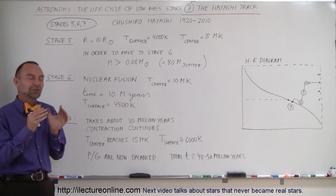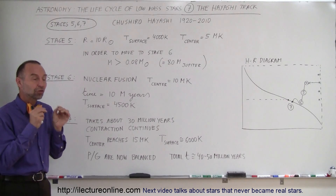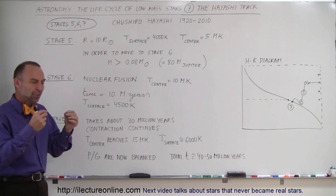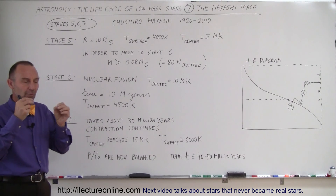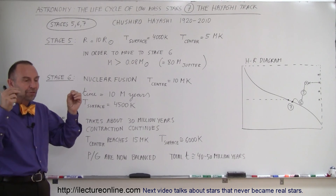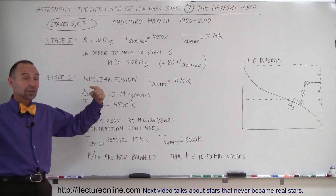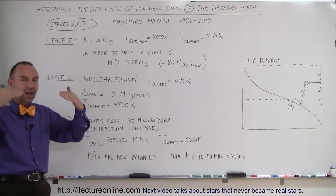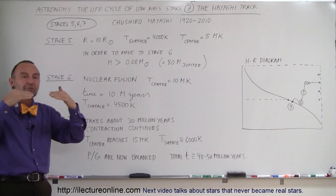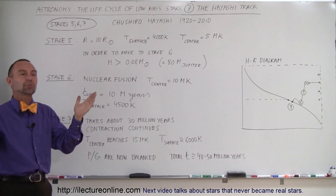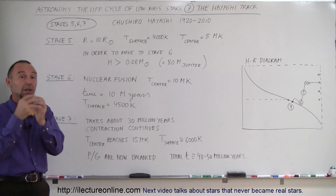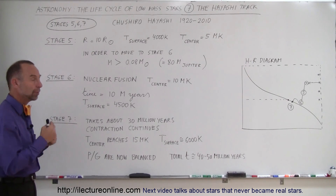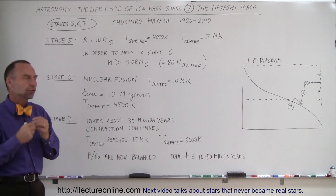How hot does it have to be at the center for nuclear fusion to start? The temperature needs to reach about 10 million Kelvin. At that temperature, the hydrogen molecules will be moving fast enough so that when they're on a collision course, the repulsive forces are not sufficient to stop them, and they will collide and fuse together into heavy elements, eventually forming helium. That's what nuclear fusion is.